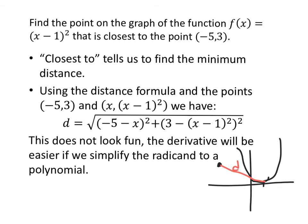Closest to tells us to find the minimum distance. Using the distance formula, we have points, right? (x, y), (-5, 3), and (x, y). Of course, I've already eliminated my second variable using the function. In the distance formula, that doesn't look fun at all. The squared, and then I do some stuff, and then I square it again, and it's the square root of all of it. The derivative will be easier if we simplify the radicand to a polynomial.